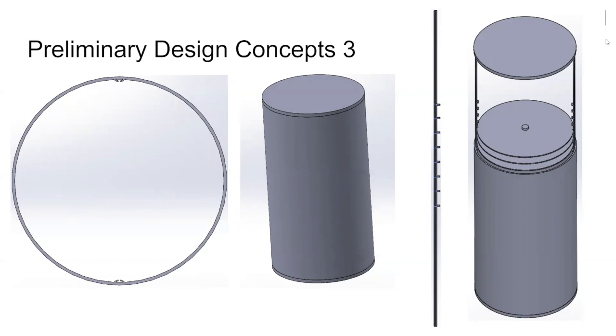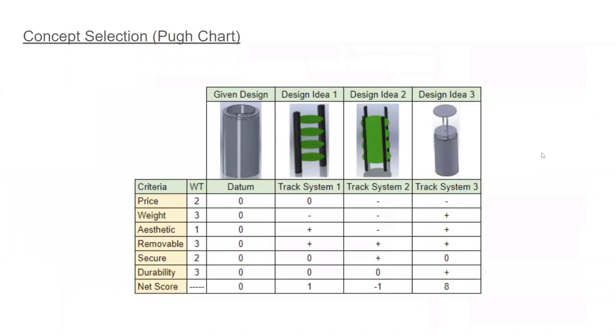Next, the Pugh chart includes the three design concepts and the design geometry we were given. The design geometry given is used as the datum. From this first Pugh analysis, design three is the top concept with a net score of eight. Design one comes in second with a score of one, and design two comes in last. Further analysis will be needed as new criteria may be introduced and concepts are polished and finalized.